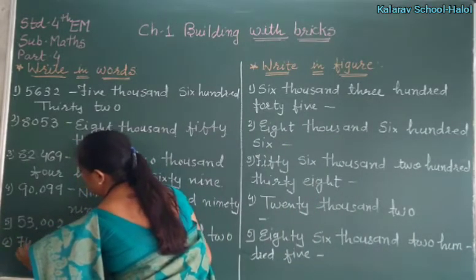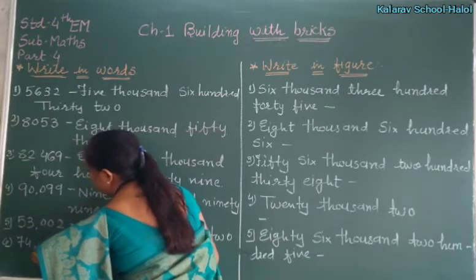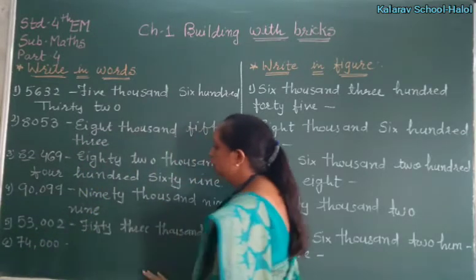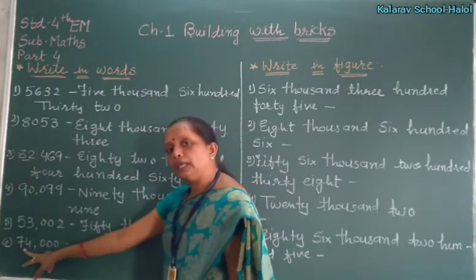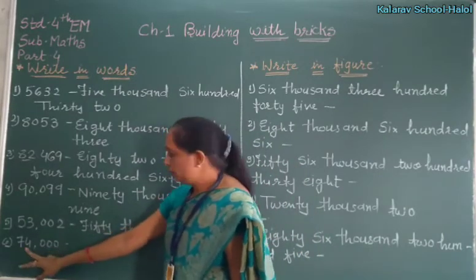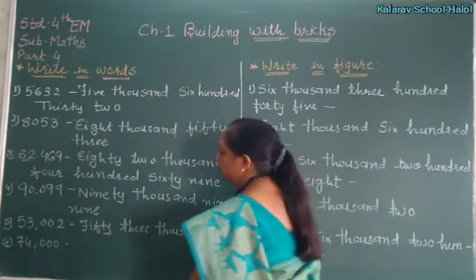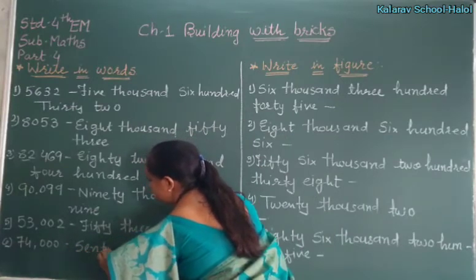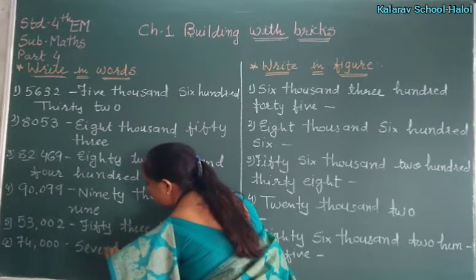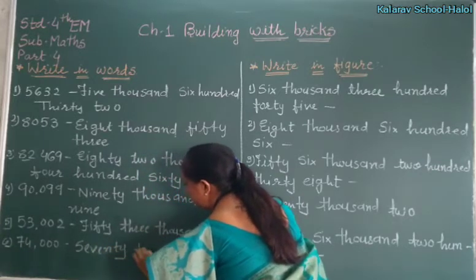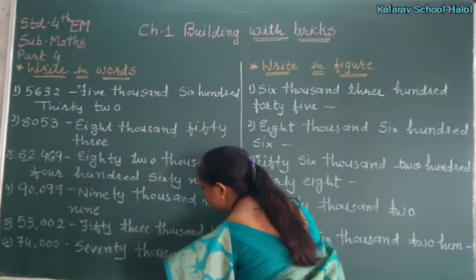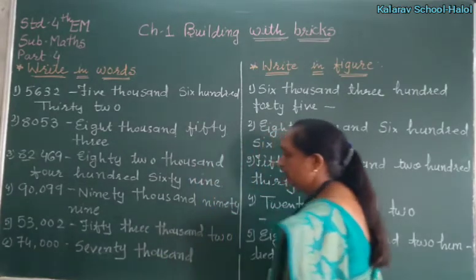74,000 — only seventy-four thousand. Right?